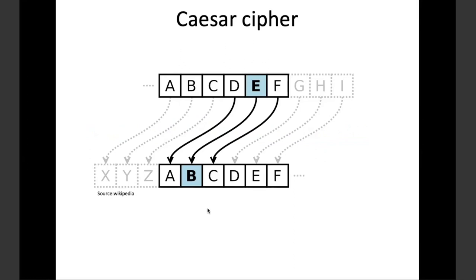Caesar Cipher is a simple substitution algorithm that merely shifts the plain text over three places. If you have A, B, C, D, E, F — D will be changed to A, so that will be the substitution. To encrypt, I'll change the letter by three alphabets. To decrypt, I'll do the same thing in reverse.